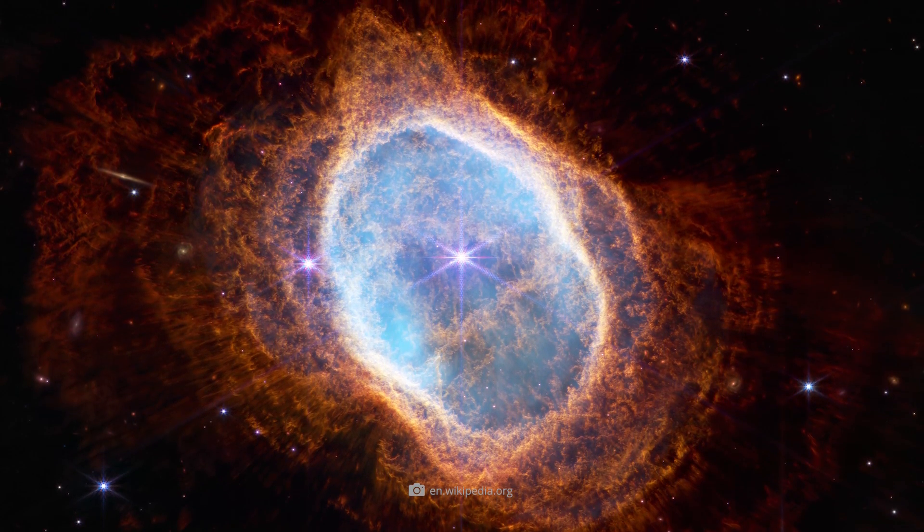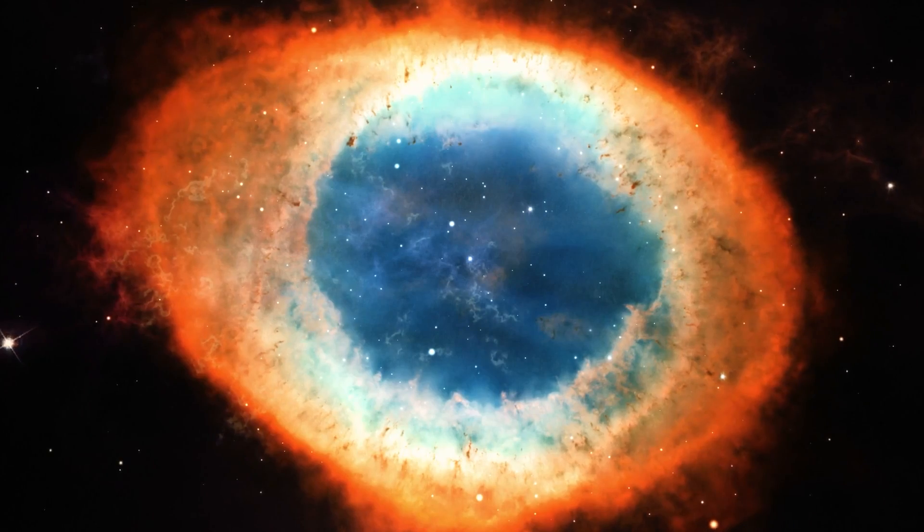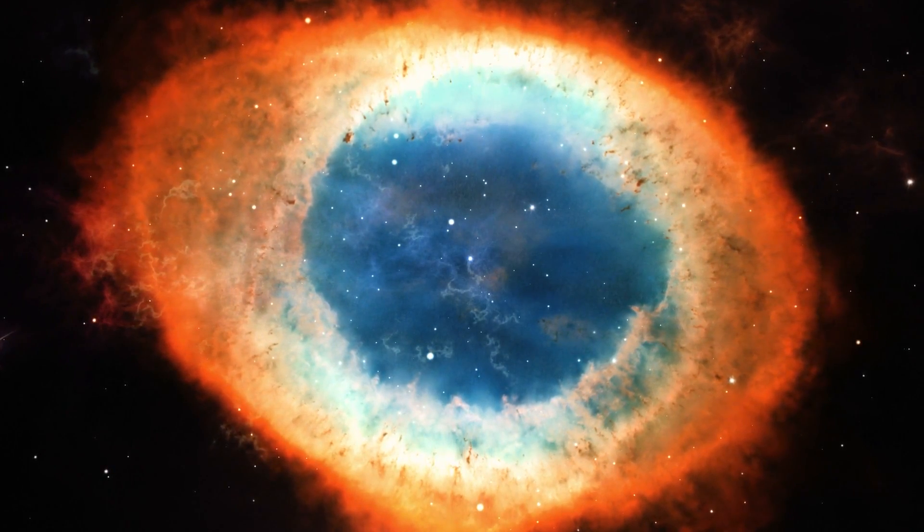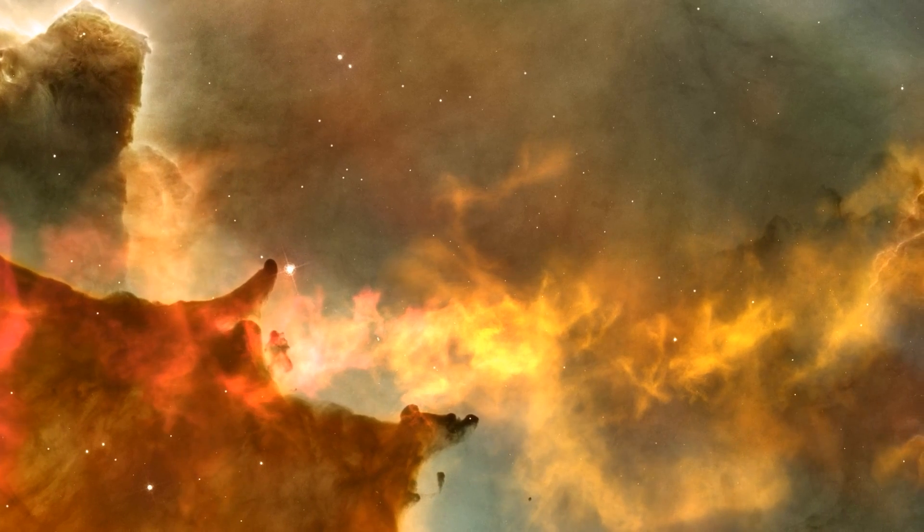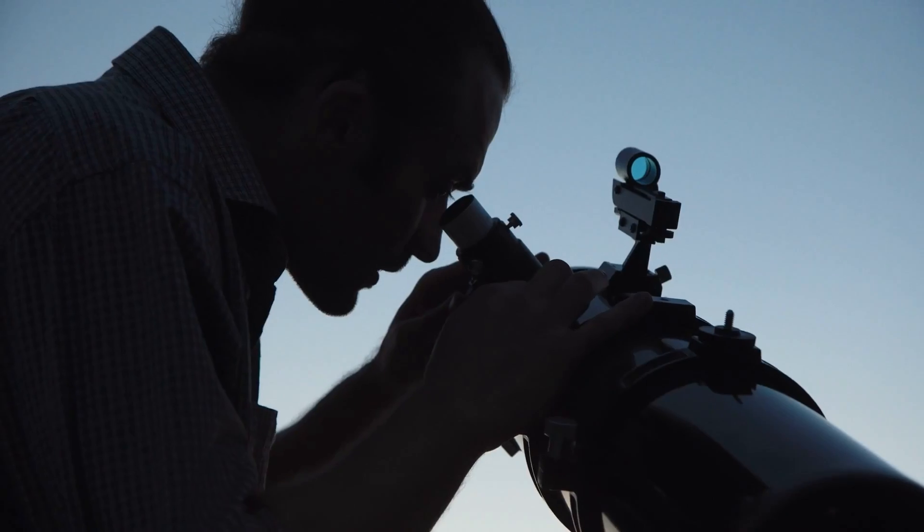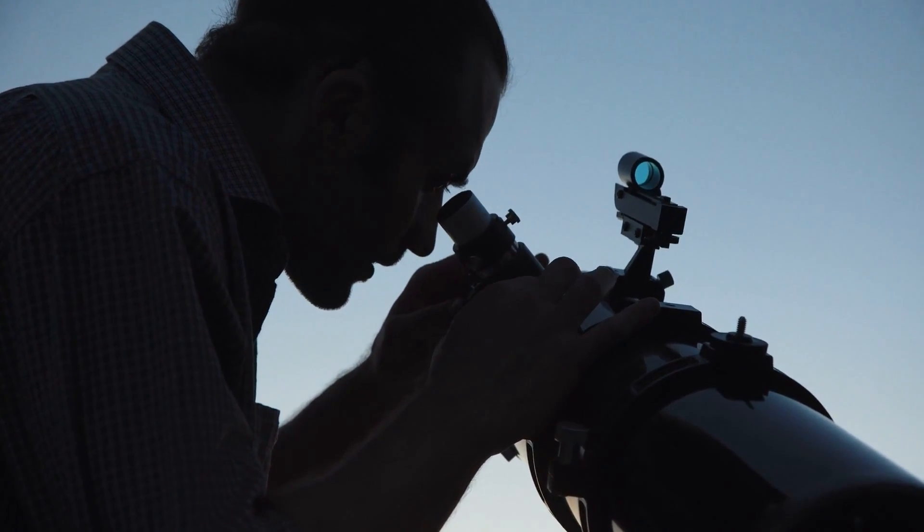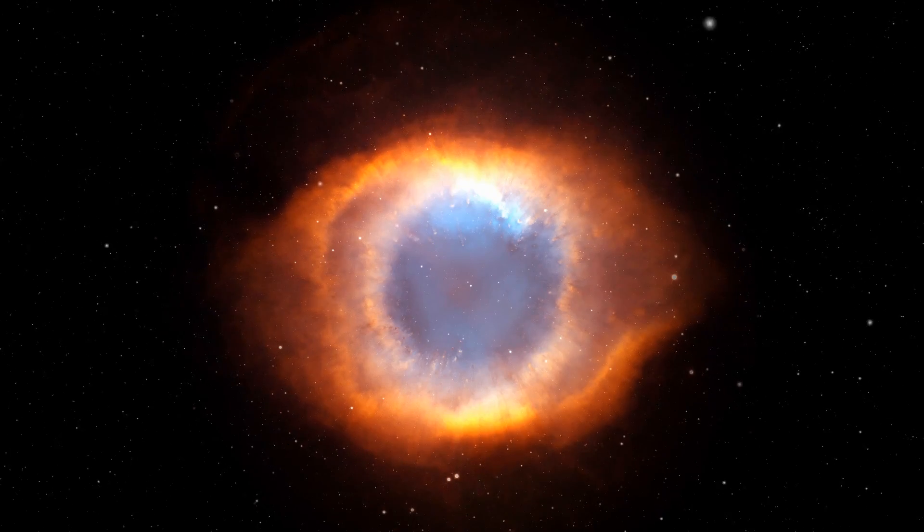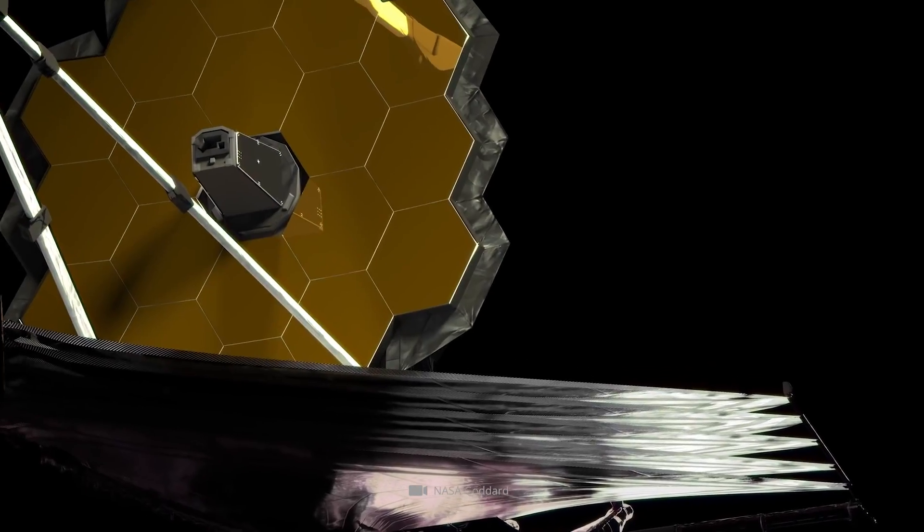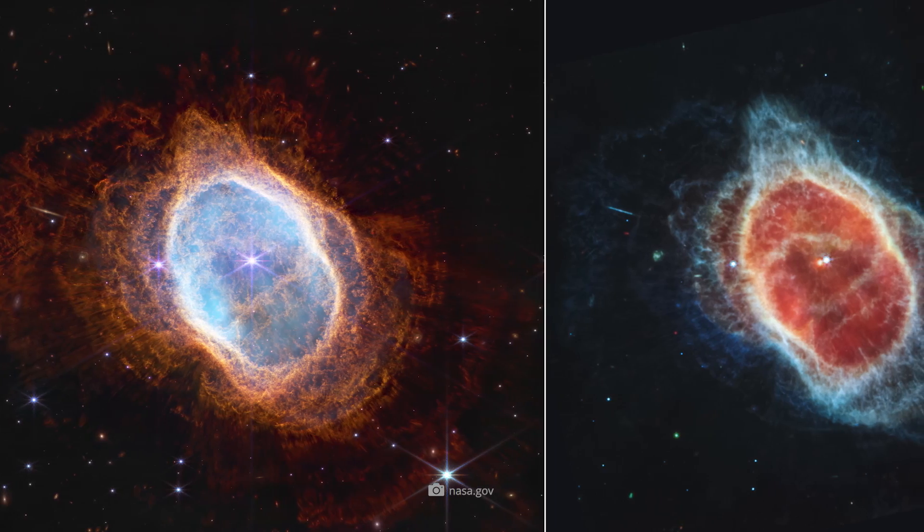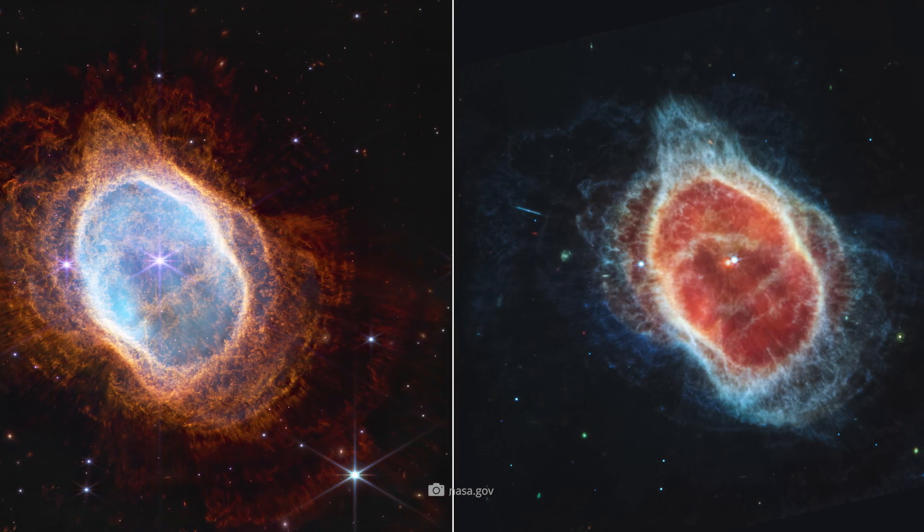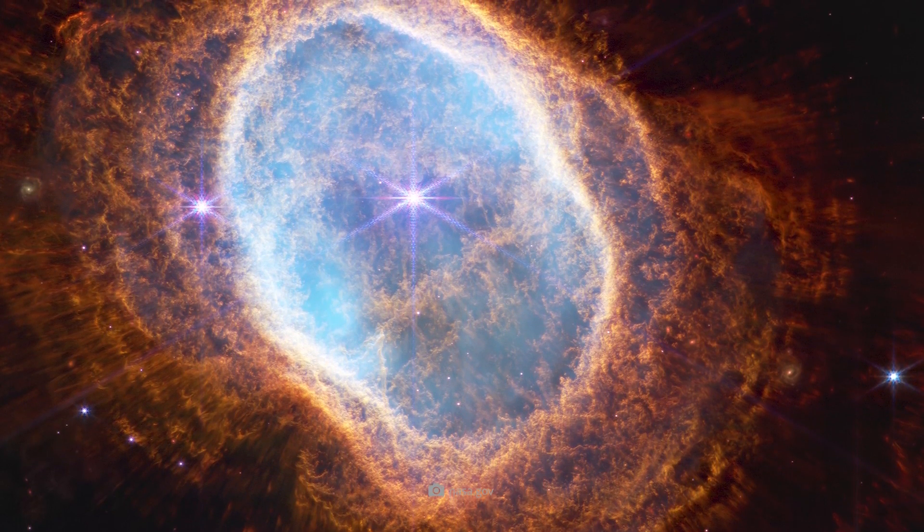NGC 3132 is classified as a planetary nebula. Contrary to the official name, these nebulae have nothing in common with planets. They are envelopes of gas and plasma ejected by dying stars. This misleading name comes from the fact that the nebulae usually appear spherical in the telescope and visually resemble planets. Originally included in the list of Webb's first subjects because of its intense color, the images of NGC 3132 hold some surprises for the experts.